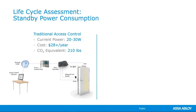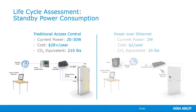A key benefit with Power over Ethernet — we have a graph here. Typically $28 a year for one standard access control door, but by utilizing the power savings of Power over Ethernet, you can get that down to $2 a year. So if your building is trying to get LEED certification points or going green is something that's important to you, this will aid in that effort.